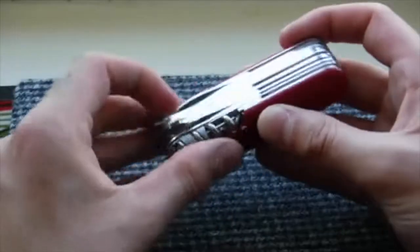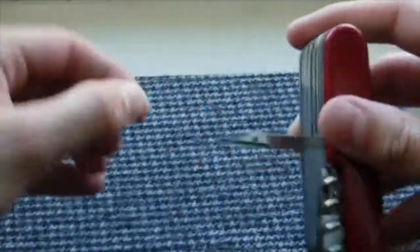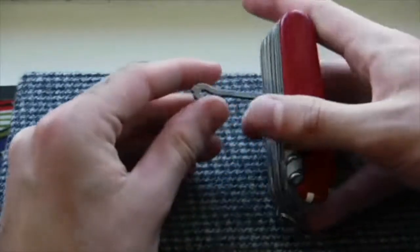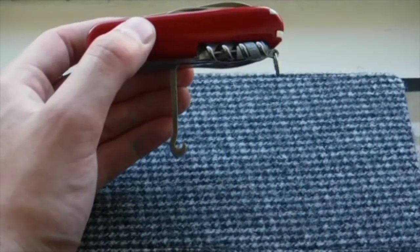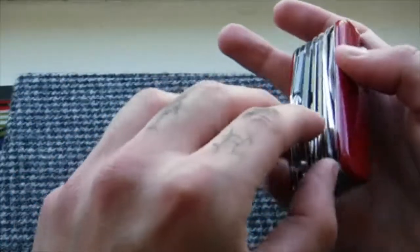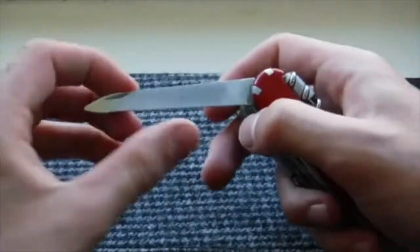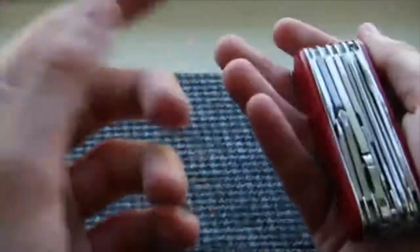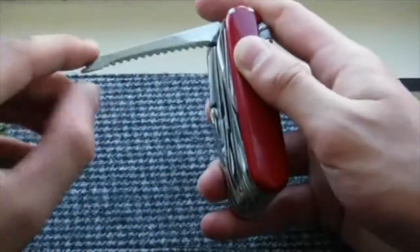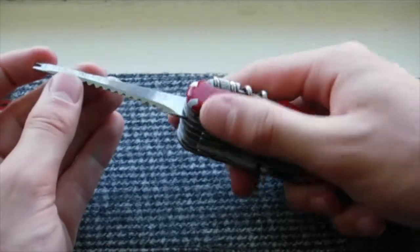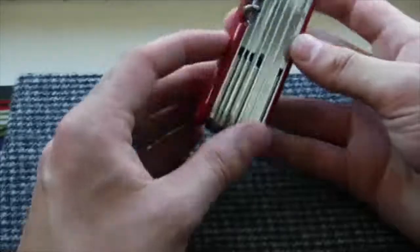Next we have the awl reamer, we have a hanging hook or gutting hook I believe. Going back, that's the wood saw, this one is the metal file and metal saw. You can also use that as a nail file, one side is for nails, one side is for metal. This is a scaling fish scaler and the prongs is a hook disgorger I believe.